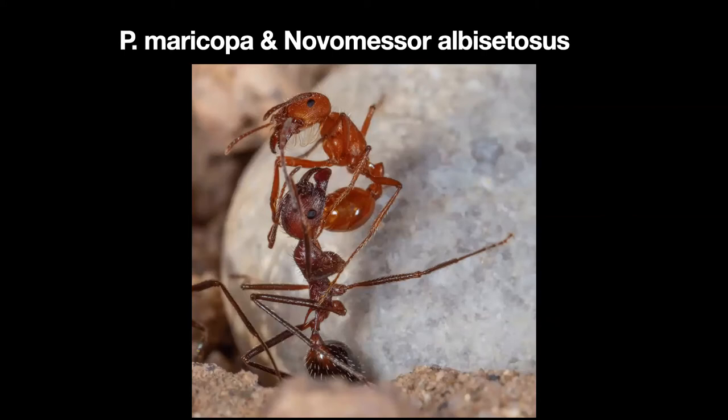Here, this ant is between a rock and a hard place — a Maricopa is stinging the albocytosis on the underside of the head. Another interesting thing: there are something like 36 species of desert ants globally that have what are called a psammophore. The psammophore — you can see it underneath the head of the ant — consists of hairs on the undersides of the head and mandibles that help them pick up sand and carry it when making their nests.